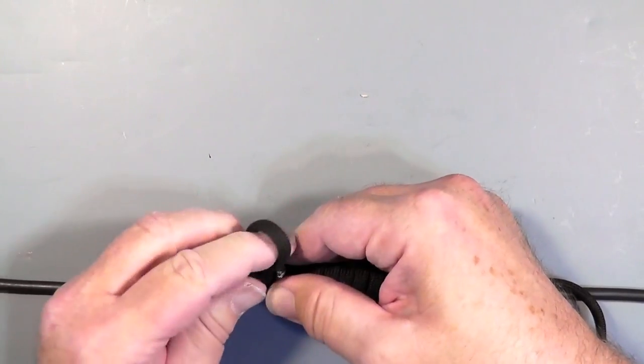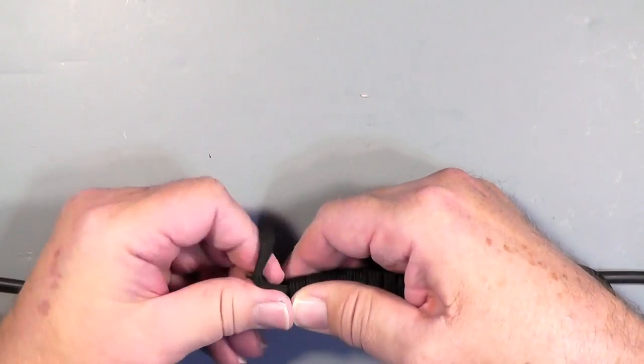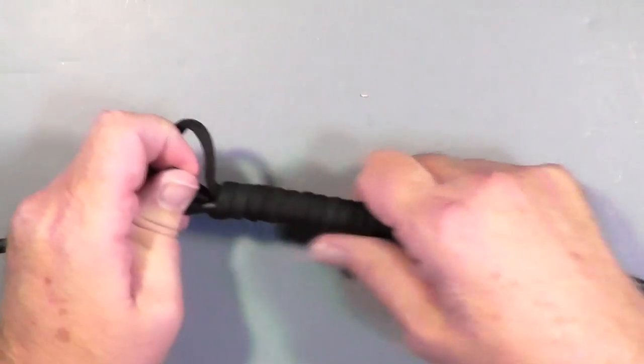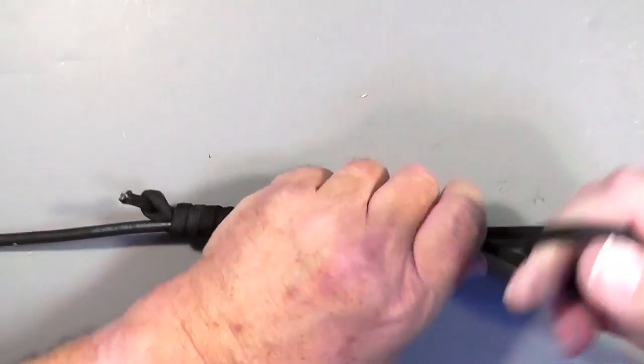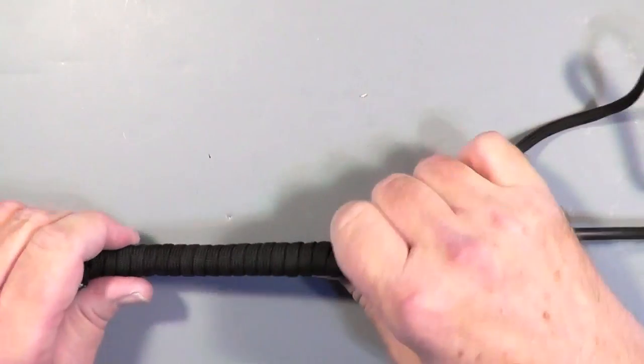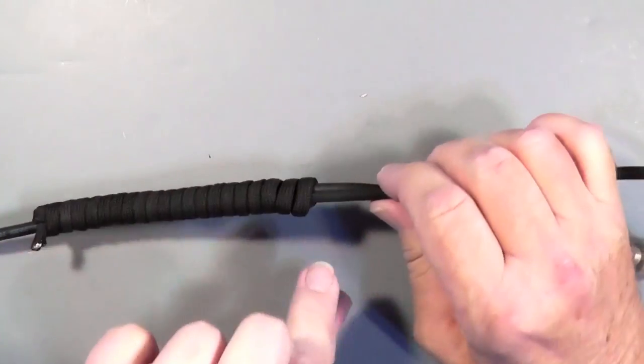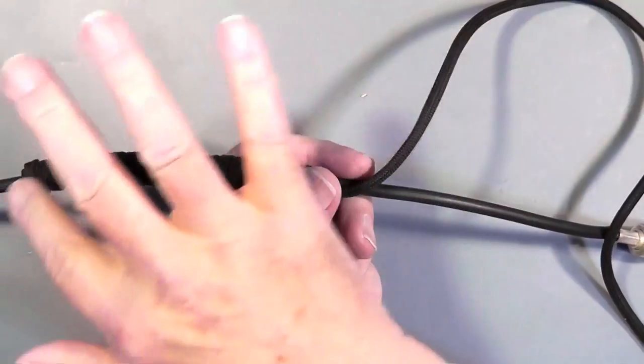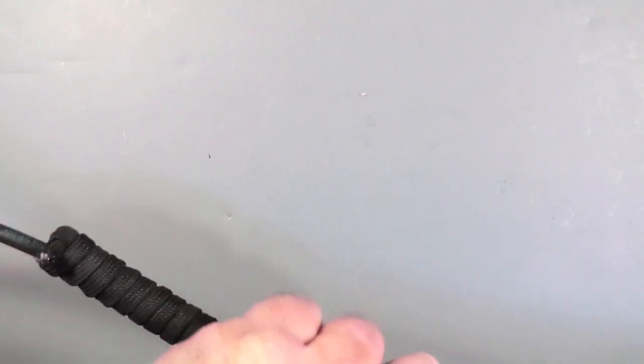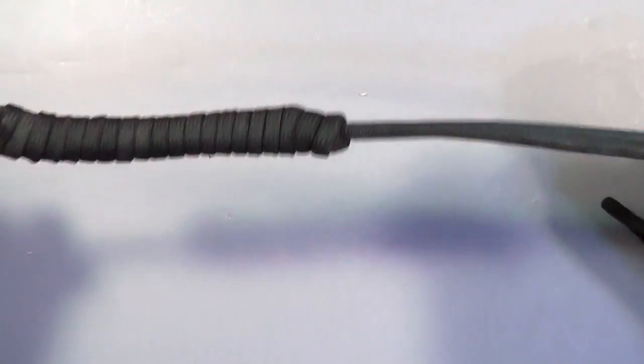Let's go ahead and put that through there and reach down here and pull on that end until it's tight. Now, we want to pull from here, this spot right here, pull this way. It will shorten up the rope. There we are.